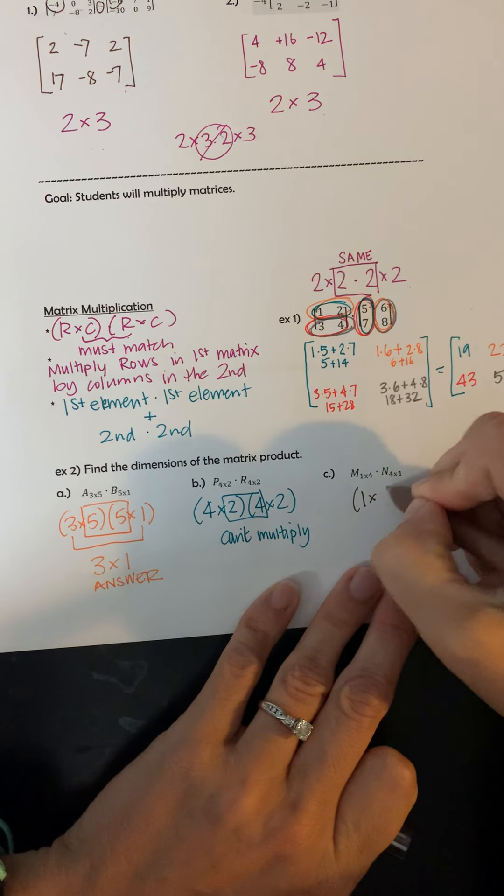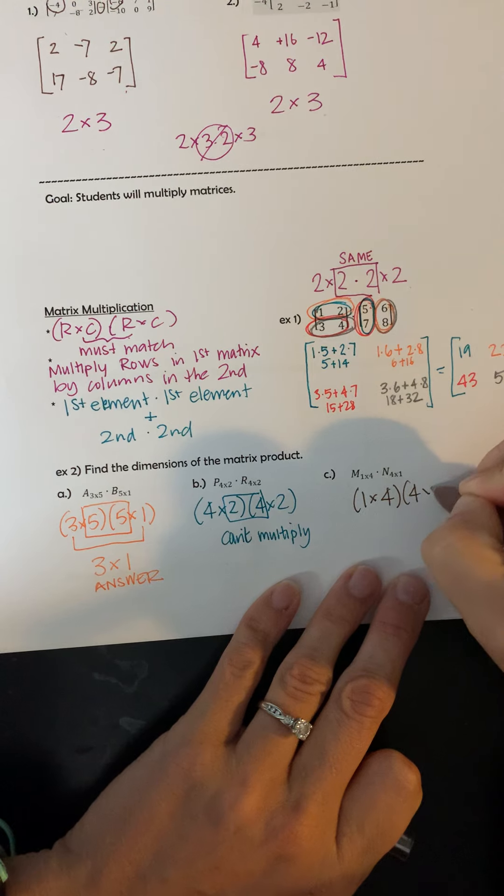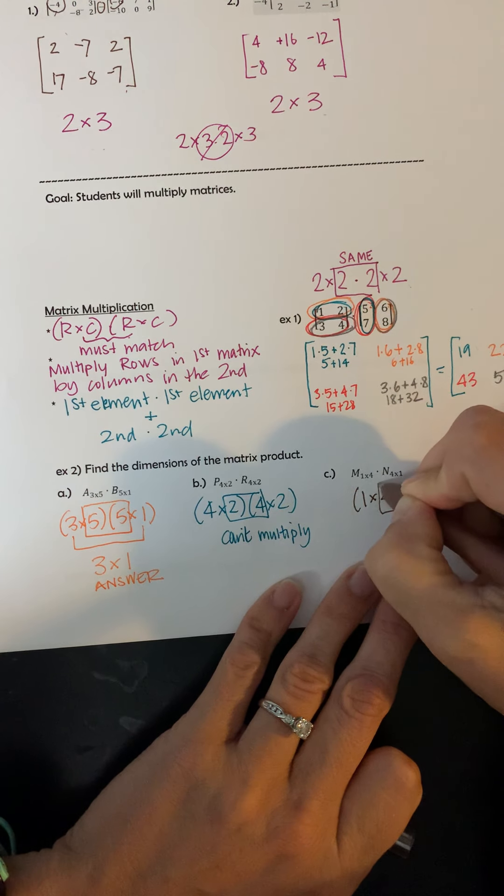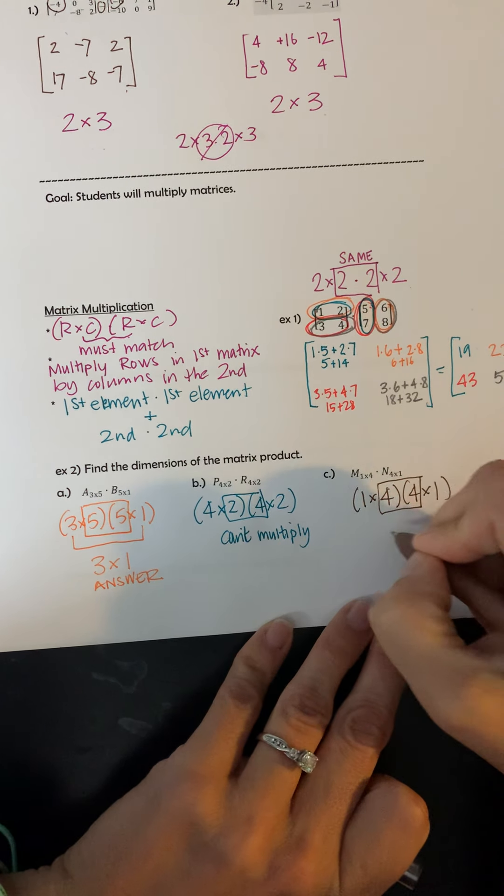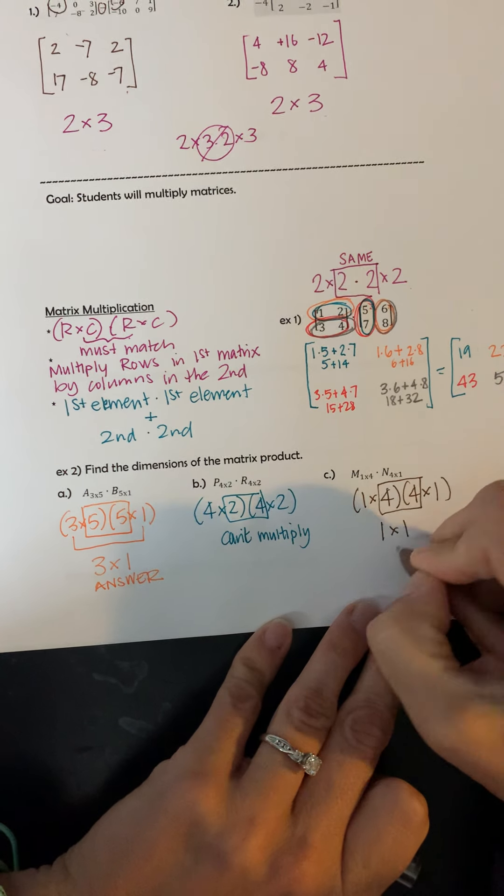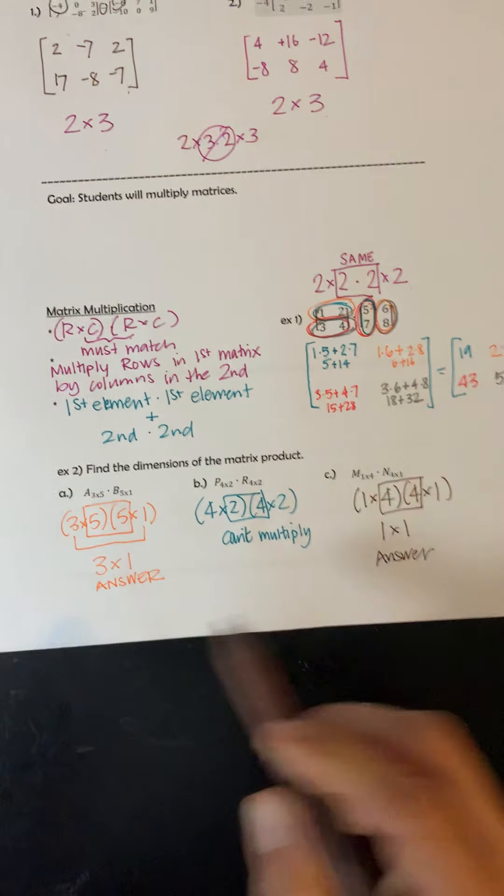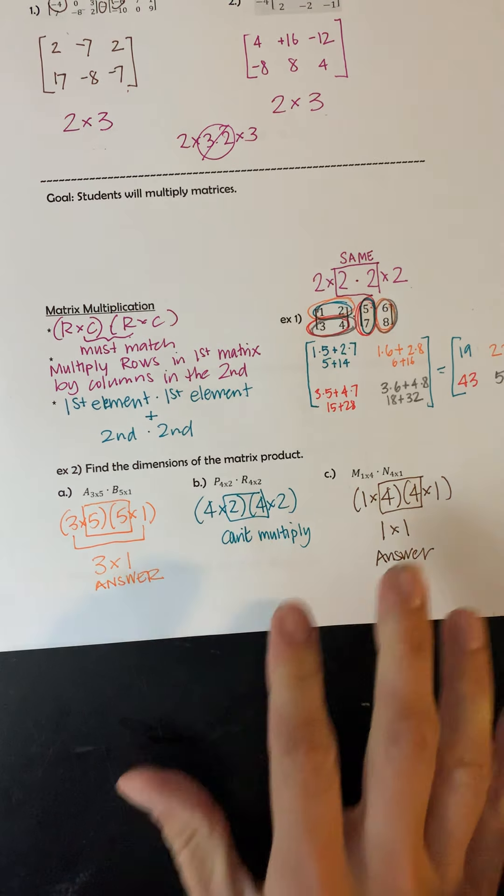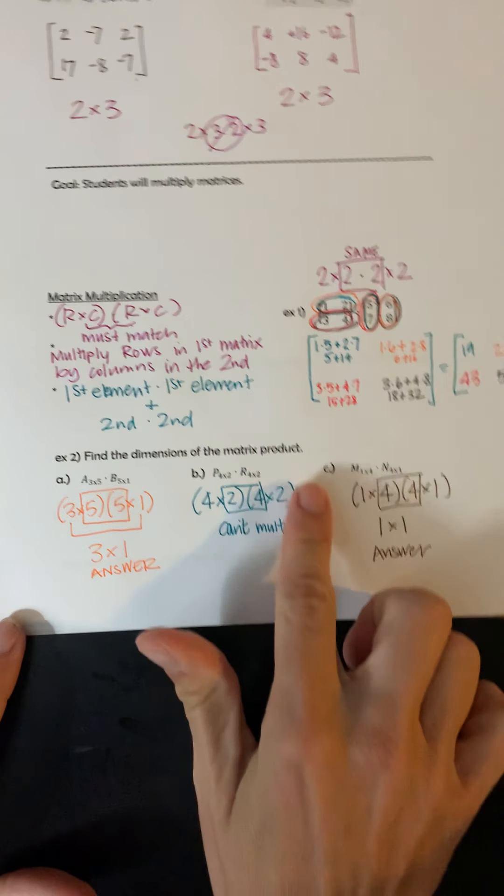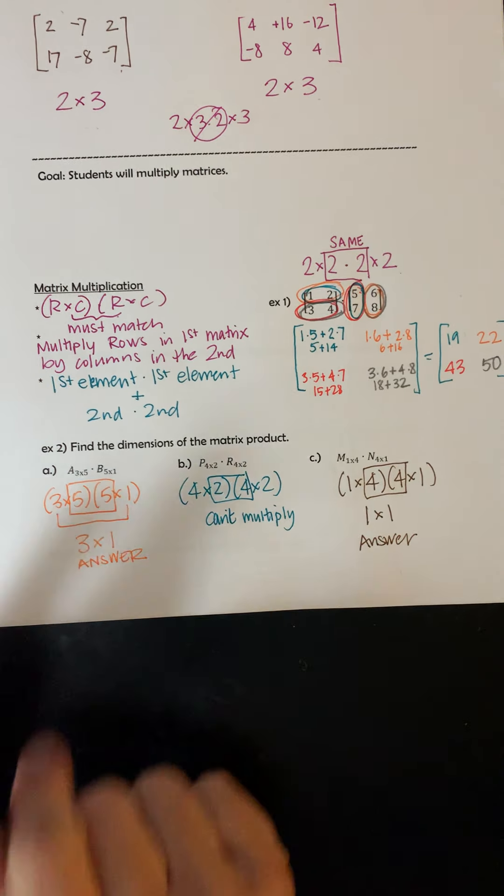And then finally our last one here, a 1 by 4 times a 4 by 1. The middle numbers match, so I can multiply those and it ends up being a 1 by 1 as my answer. So that's going to be some of your questions today in the book. It's just asking you what's going to be the size of the matrix product, and that's all they're asking you to do.